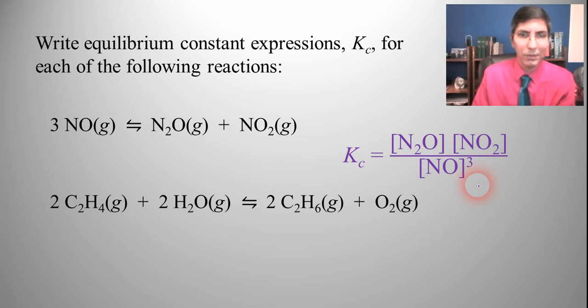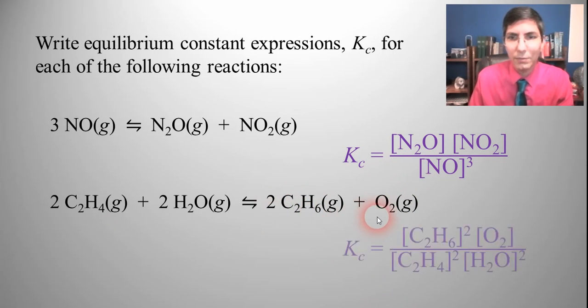Now let's try another one. Here's a maybe a slightly more complex reaction. It's done the exact same way, products over reactants raised to the power of the coefficient. So here it's going to be C2H6 squared times O2 all over C2H4 and that has to be squared as you can see here, times H2O quantity squared. So there we have our expression for Kc.